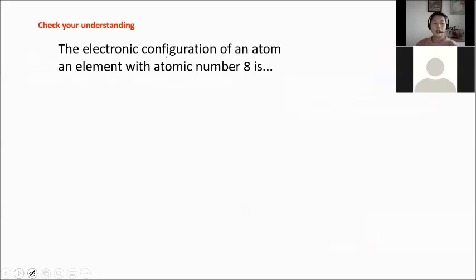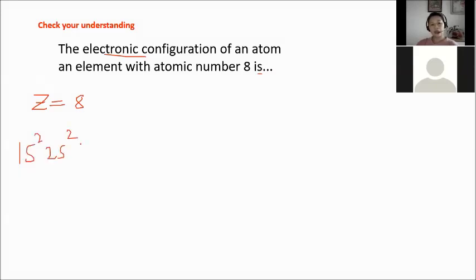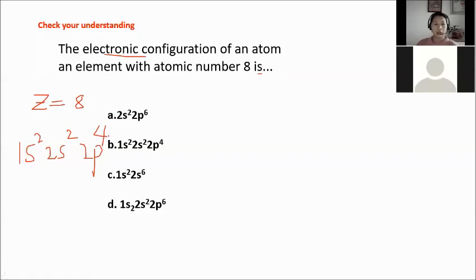The electronic configuration of an atom with atomic number 8 is: 1s², 2s², 2p4. Verify: 2 + 2 + 4 = 8. The correct answer is 1s², 2s², 2p4 (letter B).